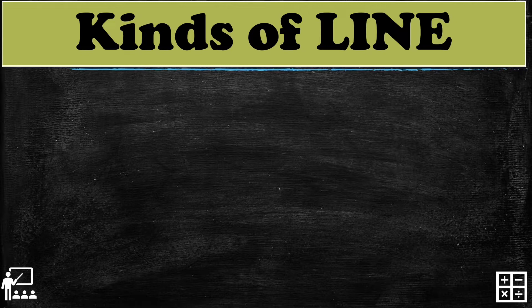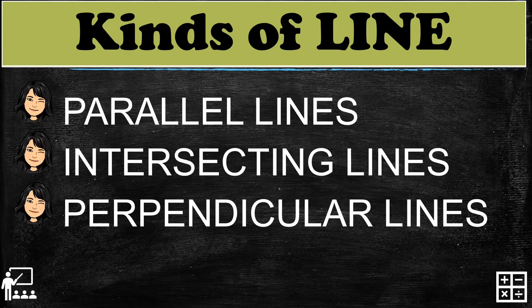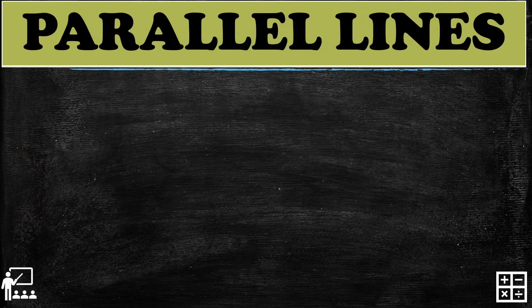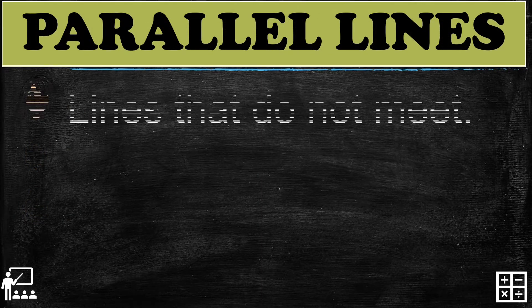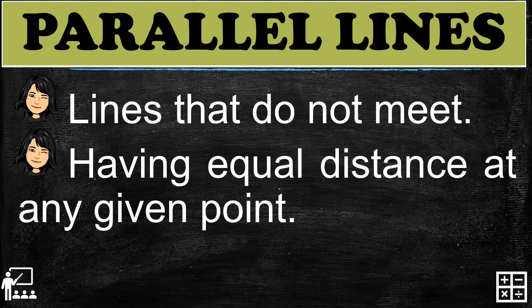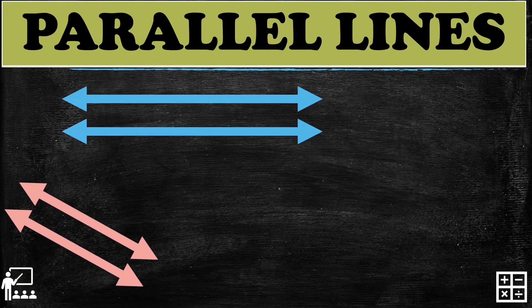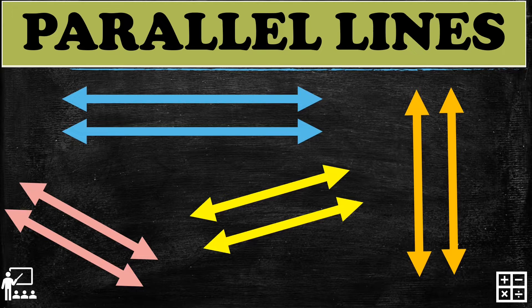There are three kinds of lines: parallel lines, intersecting lines, and perpendicular lines. Parallel lines are lines that do not meet or do not cross each other, and they have equal distance at any given point. Even though they may go in any direction, they do not cross each other, which is why we call them parallel lines.